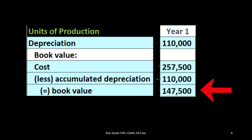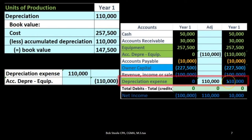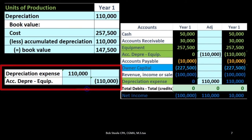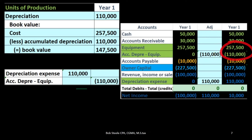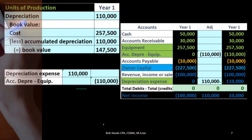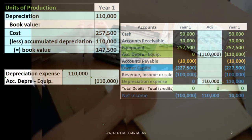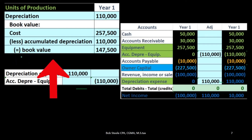The book value comes to $147,500. To record the journal entry, we debit depreciation expense and credit accumulated depreciation for $110,000, posting it to the contra account. We started with zero in accumulated depreciation and brought it up to $110,000, giving us a book value of $257,500 minus $110,000. We also have a depreciation expense resulting in a reduction of net income. In year two, we would again count the number of miles, widgets, or pages generated, multiply that by the rate, and record the same type of journal entry.